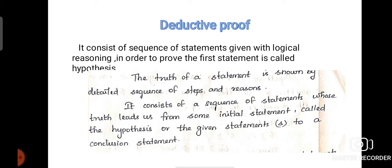And deductive proof. In deductive proof, the truth of a statement is shown by a detailed sequence of steps and reasons. The procedure consists of a sequence of statements whose truth leads us from some initial statement called the hypothesis or given statements to the conclusion statement. We will analyze from the hypothesis, apply appropriate statements, and deduce to the conclusion. By applying existing statements we try to prove new statements — that is called deductive proof.